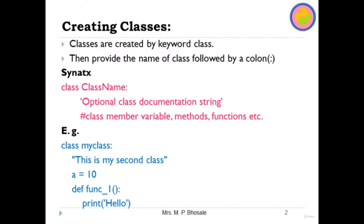The first thing is the class. So what is a class? A class in Python is a logical grouping of data and functions. It gives the freedom to create data structures that contain arbitrary content and hence are easily accessible. For example, for any bank employee who wants to fetch customer details online, they would go to the customer class where all its attributes like transaction details, withdrawal and deposit details, and outstanding debit would be listed out.